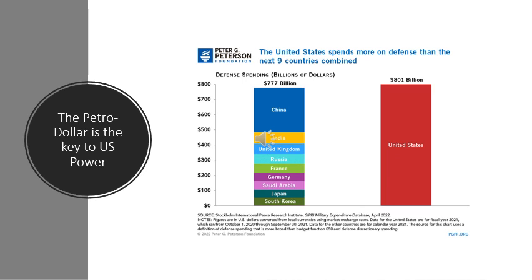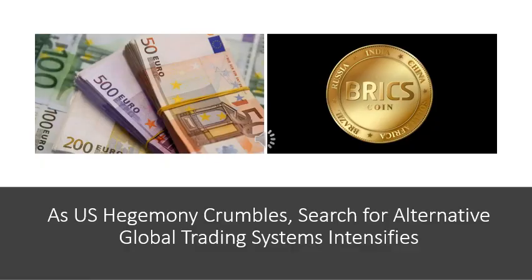The petrodollar is the key to US hegemony and power in the world. The US gets to spend as much money as it likes because it only needs to print money, while other countries must have dollar backing for their currencies, at least until recently. For a number of reasons, US power has declined recently and emerging power centers have attempted to create alternatives to this dollar-based system, because everyone realizes the enormous advantages that the US derives from having dollar-denominated trade.